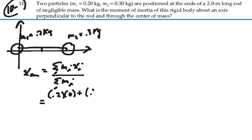plus mass 2, 0.3 kilograms, multiplied by its position, which is at 2, over the total mass, which is going to be mass 1 plus mass 2.